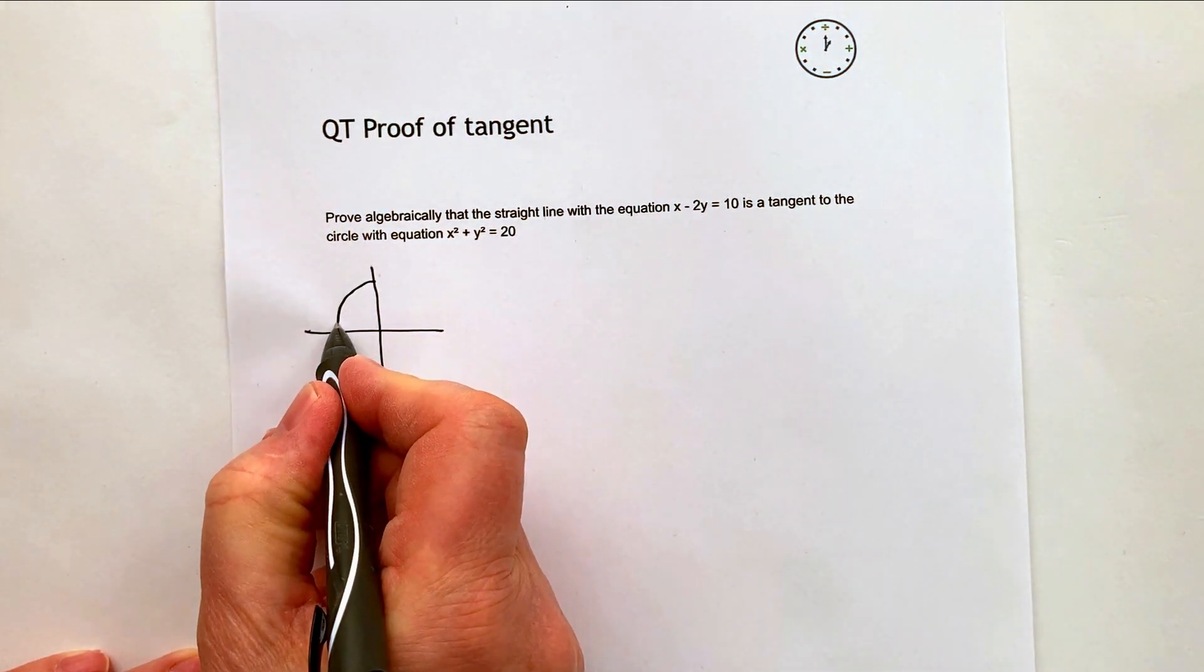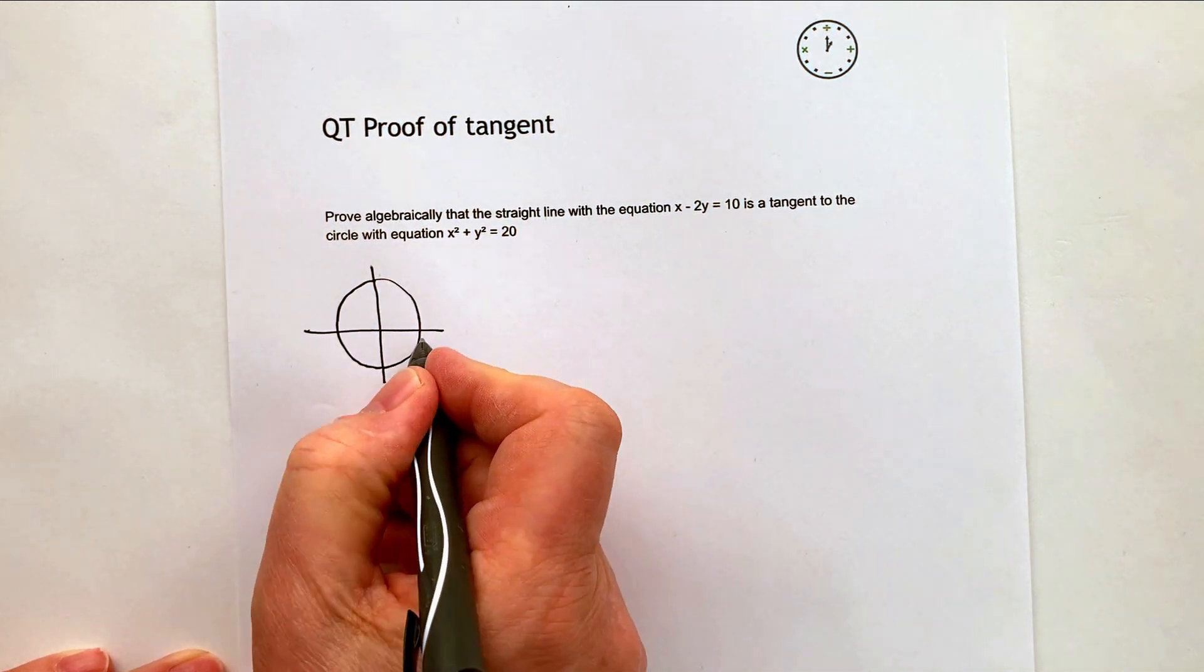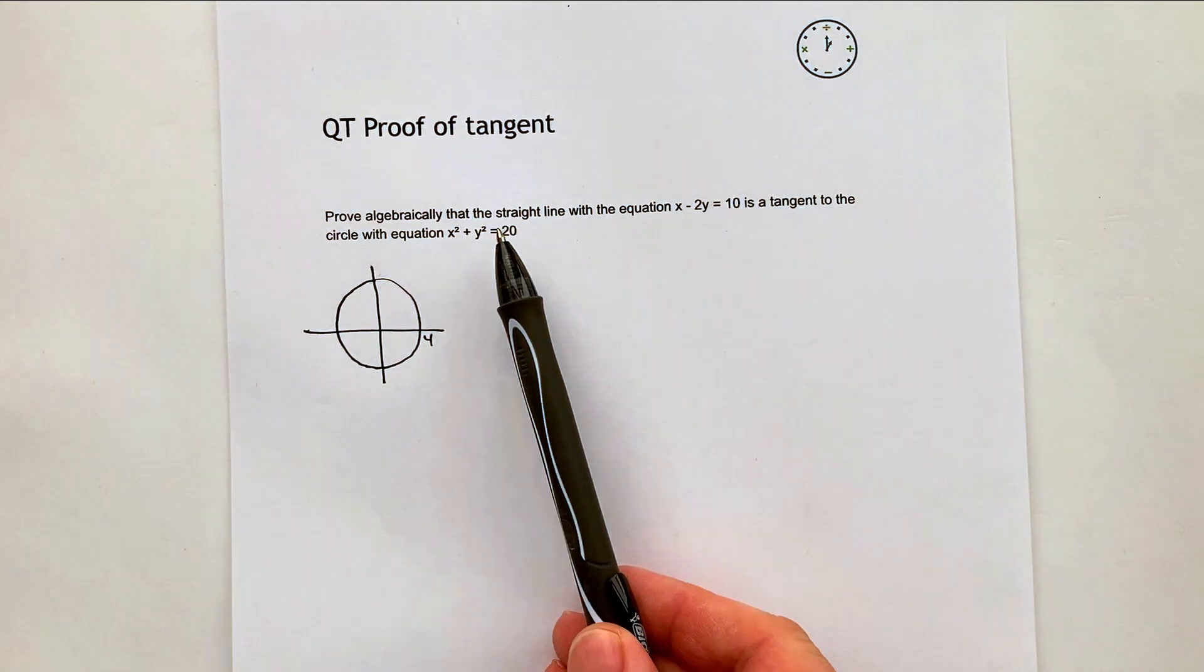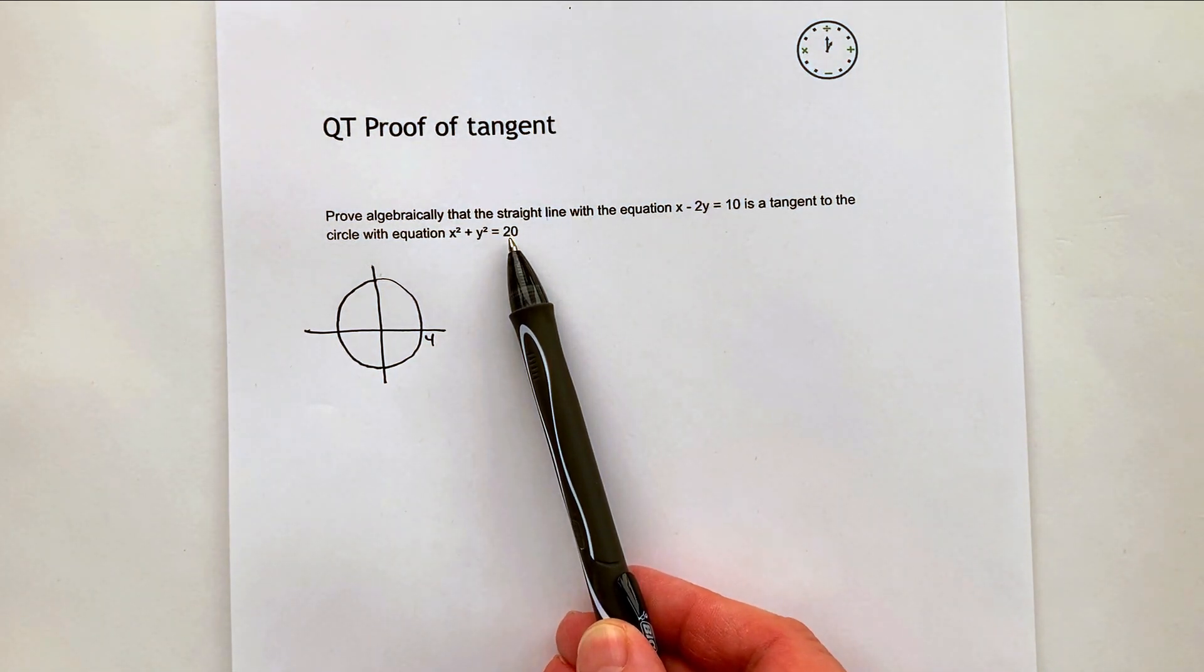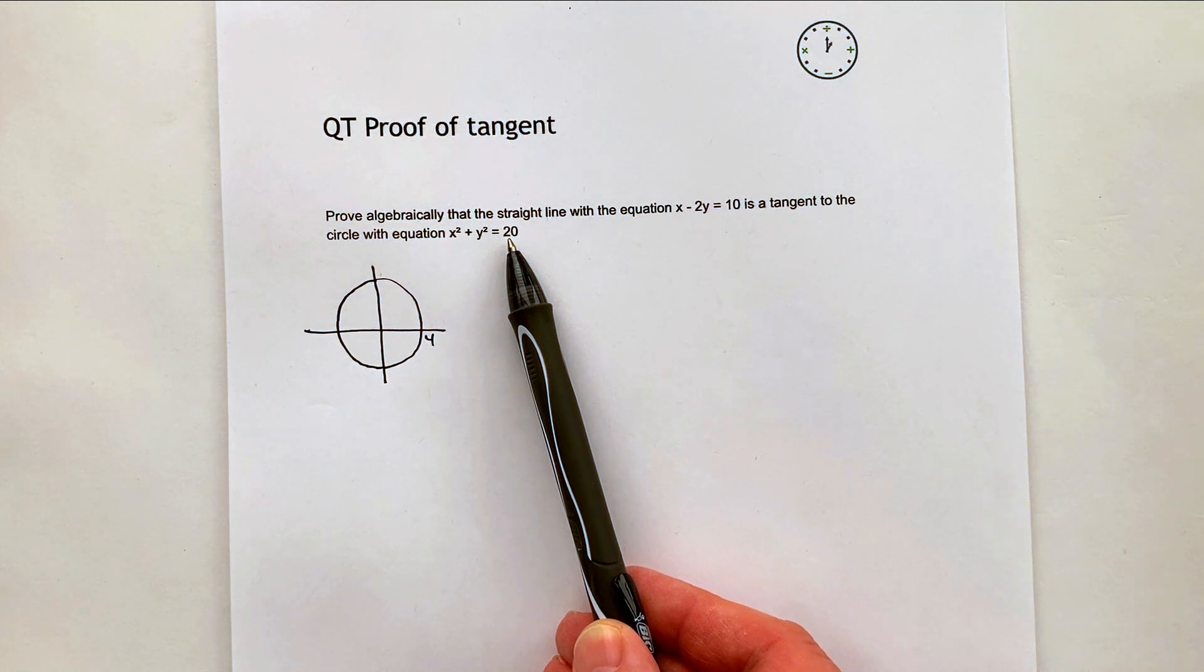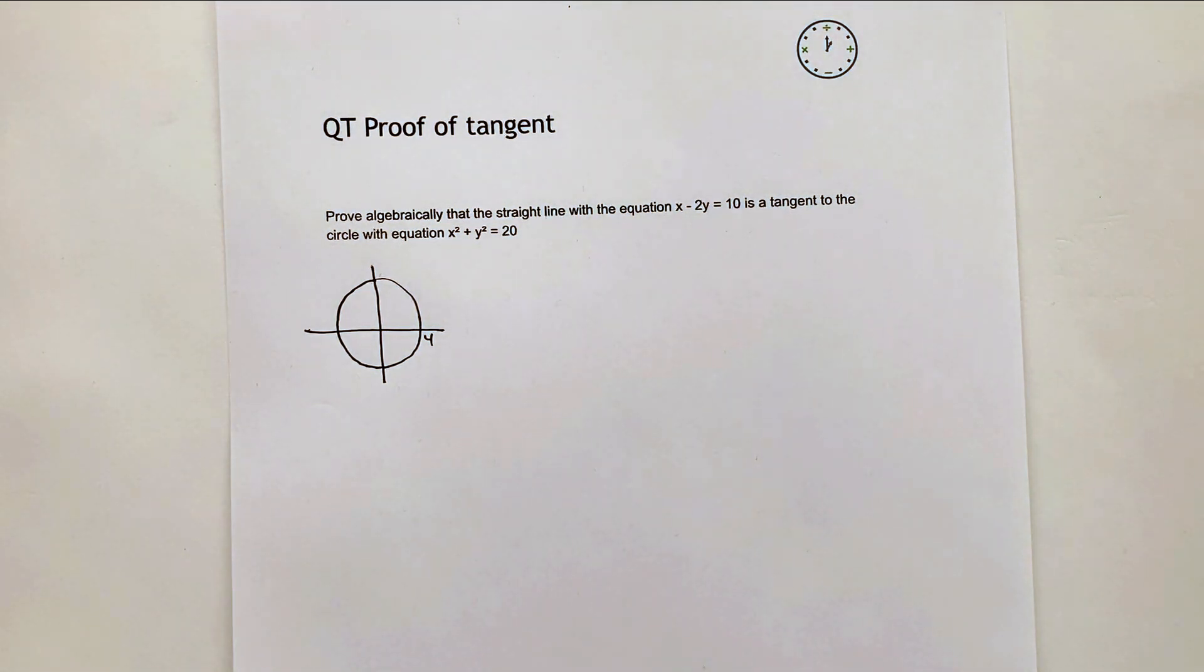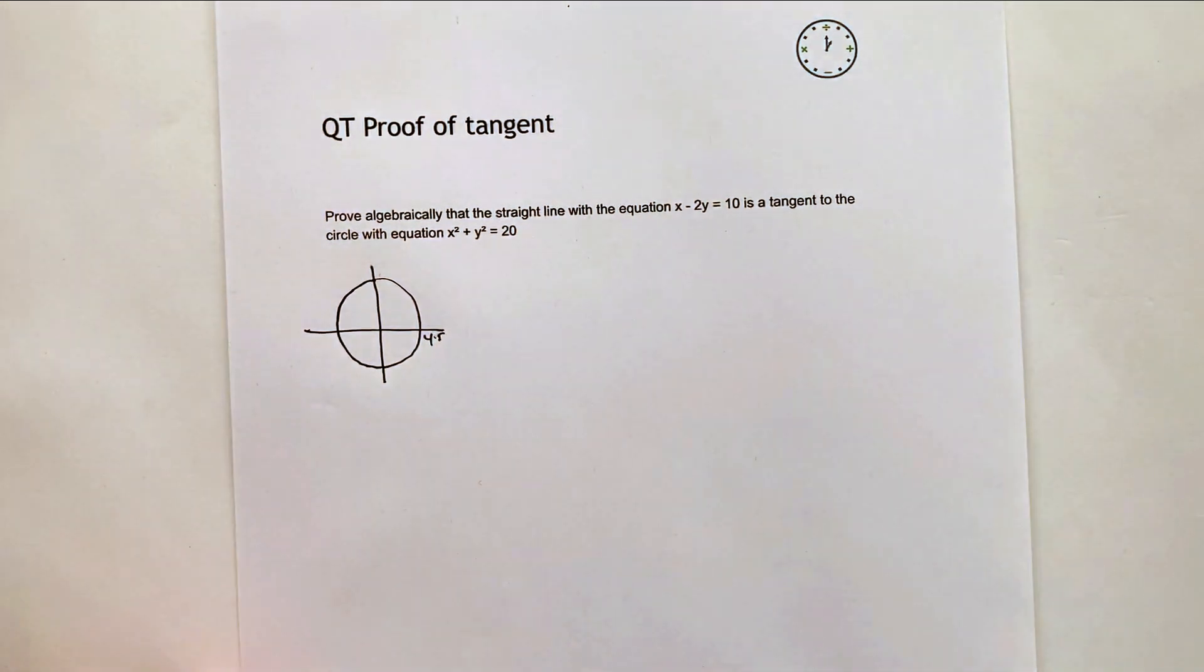Very roughly this would have a radius of about four. Now the reason that is, is because this is r squared. So the square root of 16 is four, the square root of 25 is five. So this is probably about four, four and a half. So in fact I'll actually make that four and a half.